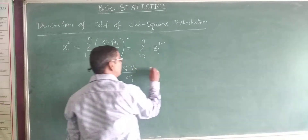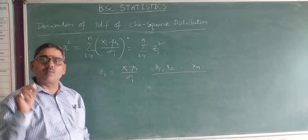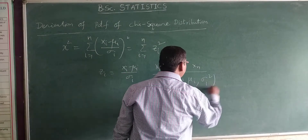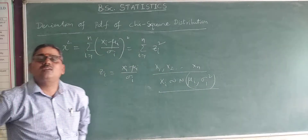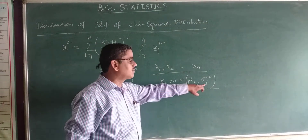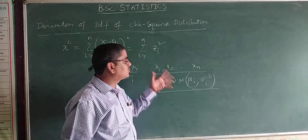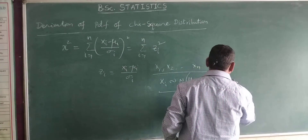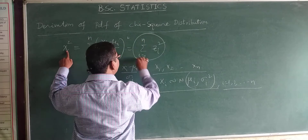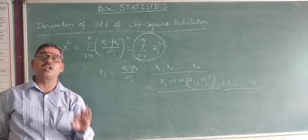Here x_1, x_2, ..., x_n are independent normal variates, where x_i follows a normal distribution with mean mu_i and variance sigma_i squared, for i = 1 to n. So chi-square equals summation z_i squared, for which I calculate the moment generating function.